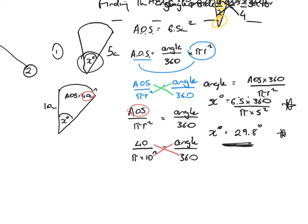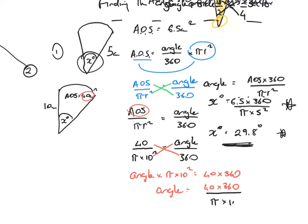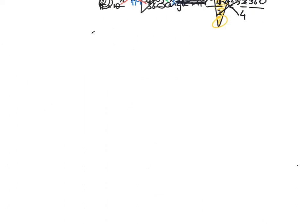Cross multiply the diagonals: angle times pi times 10 squared equals 40 times 360. I now want the angle on its own, so I bring pi times 10 squared down and divide. The angle equals 40 times 360 divided by pi times 10 squared. Enter that into the calculator to one decimal place — that's 45.8 degrees.